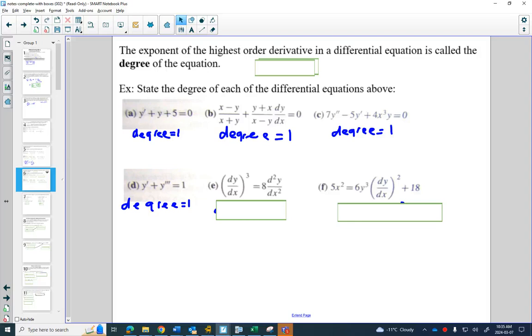It's not until the last question here. This one still has a degree of 1. The first derivative has a degree of 3, but the highest one is the d squared y. It has a degree of only 1. It's only in this last one that you have a degree of 2.